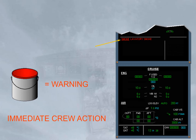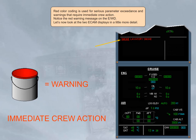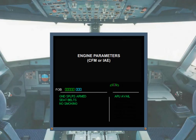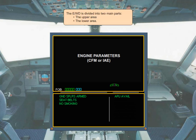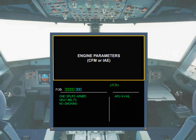The engine warning display is divided into two main parts: the upper area and the lower area. The upper area is used for the main engine parameters, fuel onboard (FOB), and slat-flap position indications.